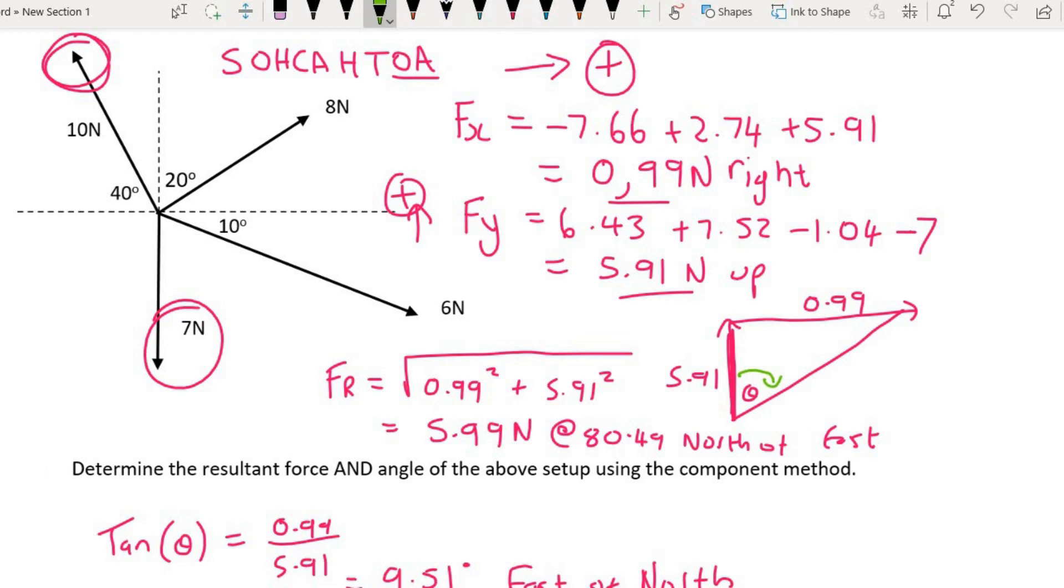Can you see the similarity here? 80.49 north of east, or 9.51 east of north. 9.51 and 80.49 add up to 90. So it actually comes down to whether you are using this angle or whether you are using this angle. Both of them are correct.